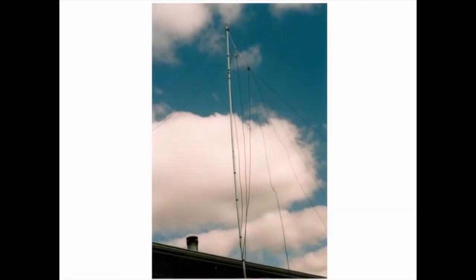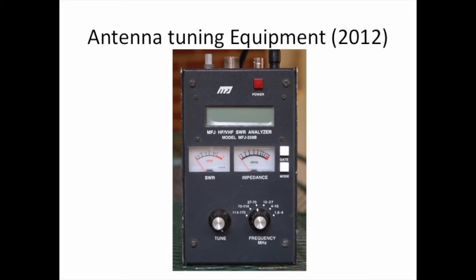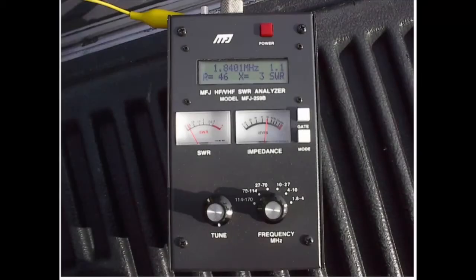It doesn't take a big location to have antennas. This was at a location where antennas were severely restricted — these are inverted-V antennas, almost invisible. This was tuning my tower for a 160 contest, right on the edge of the water — we did quite well in 1973 with that. There's a lot of equipment nowadays that's a lot smaller, like the MFJ-259 antenna analyzer, a great little piece of equipment that shows frequency, resistance, and reactance.